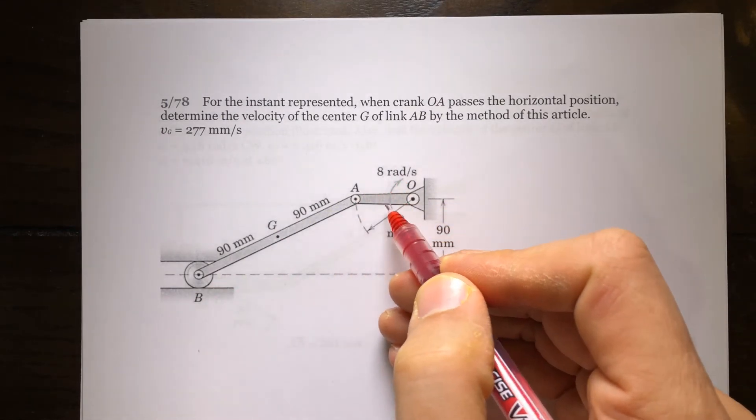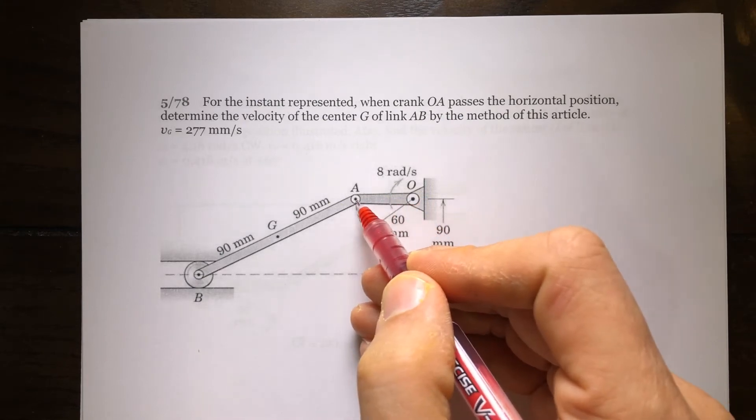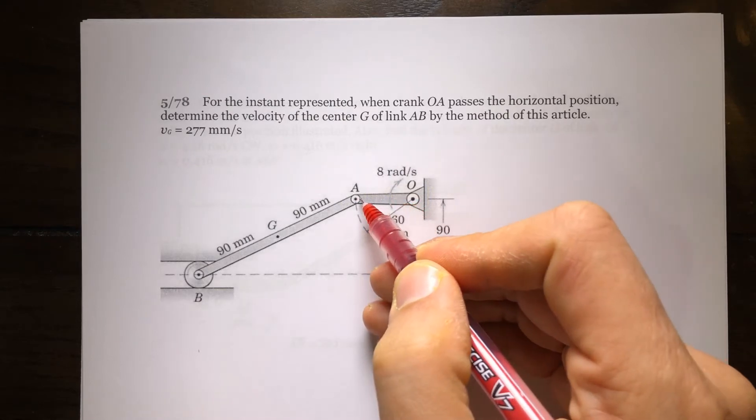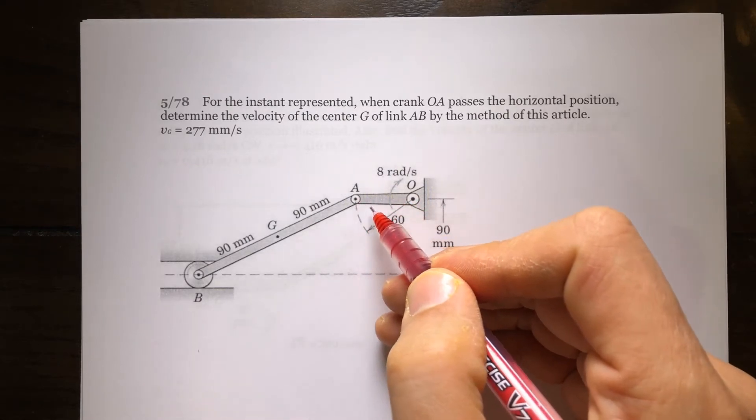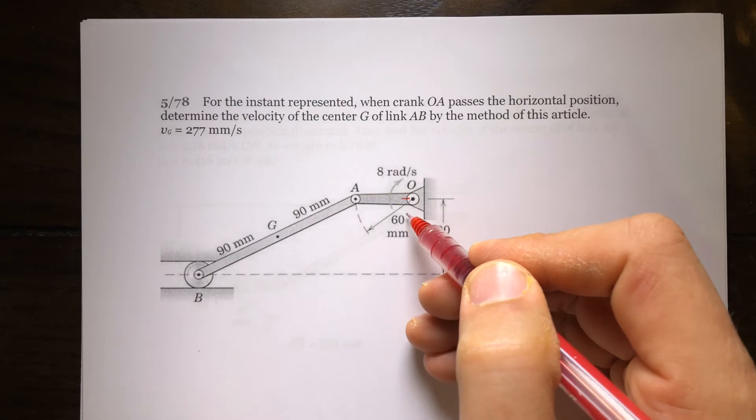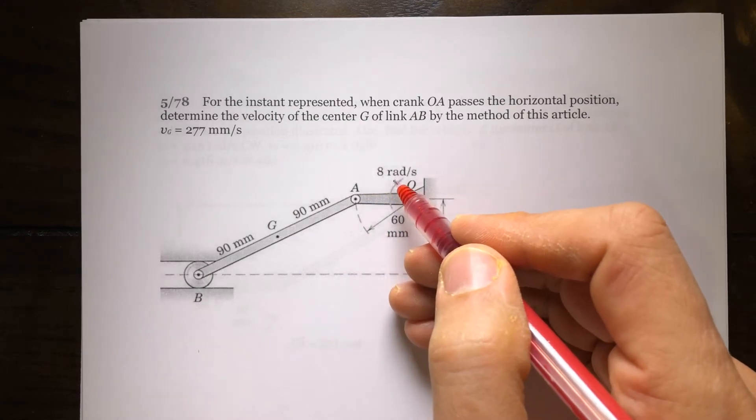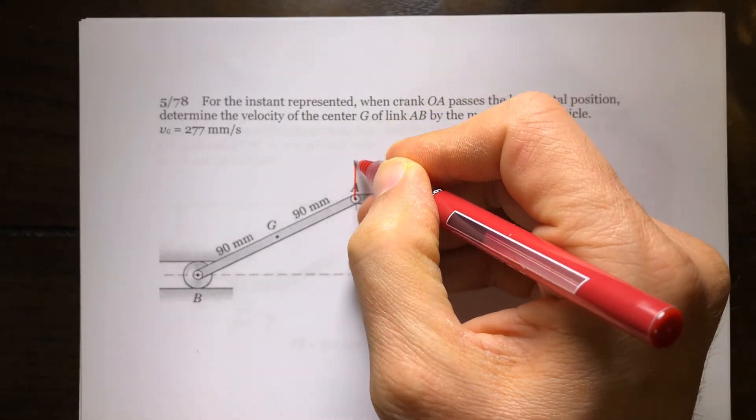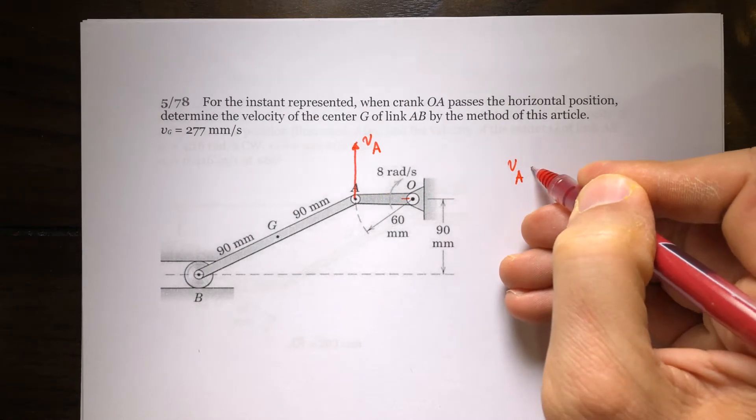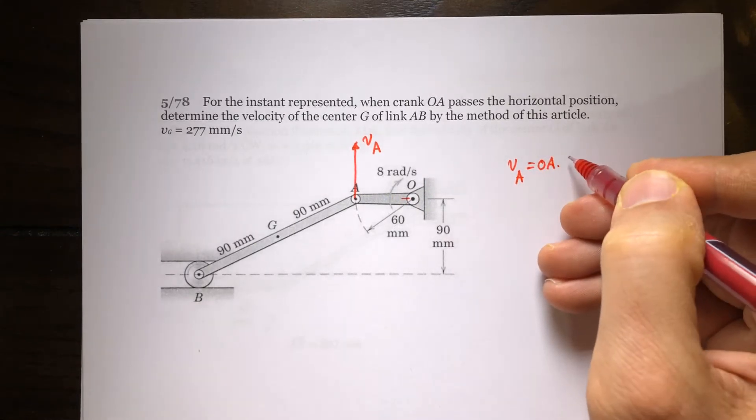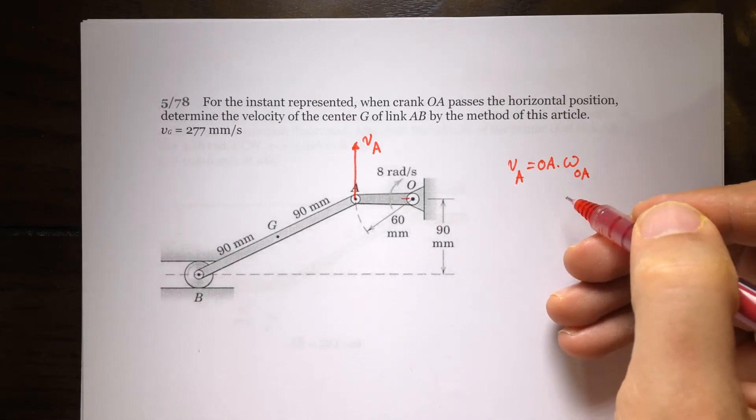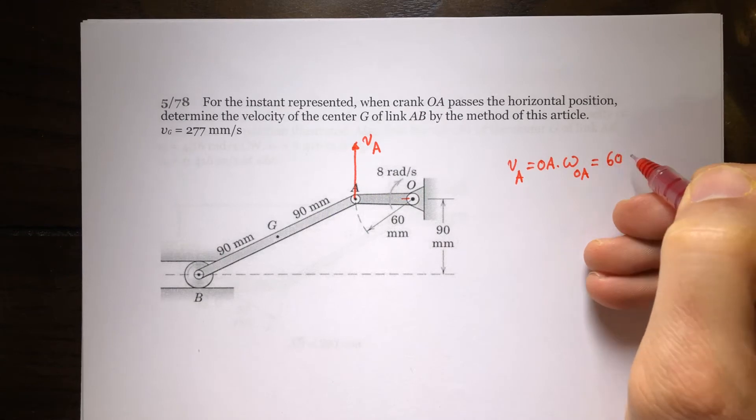What we know: first of all, we know the velocity of A because A is on this link too, and we know the angular velocity of this bar. So velocity of A is going to be perpendicular to OA, and the magnitude is r times omega. 60 millimeters times 8 radians per second, so velocity of A is in the vertical direction, magnitude OA times omega OA, which is 60 millimeters times 8 radians per second, 480 millimeters per second.